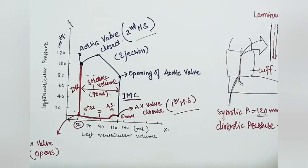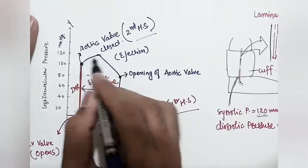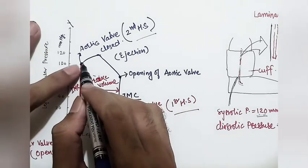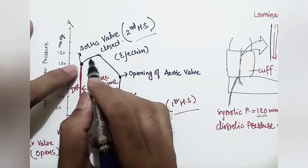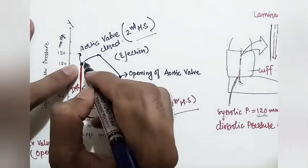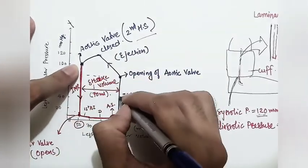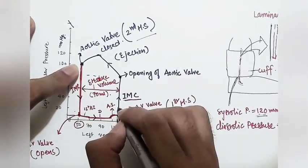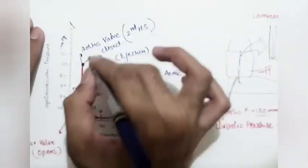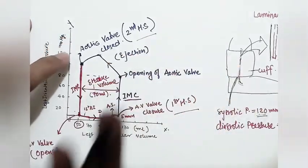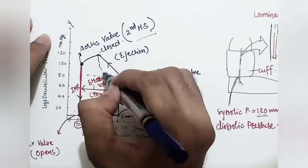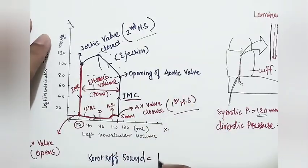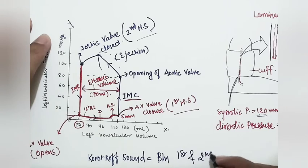This turbulence produces a sound, which is called the Korotkoff sound. On the P-V loop graph, the ejection phase (between first and second heart sound) corresponds to pressures between 80 and 120 mmHg — which is exactly where blood pressure is measured. The graph follows an anticlockwise direction, and the Korotkoff sound is heard in the portion between the first and second heart sound.